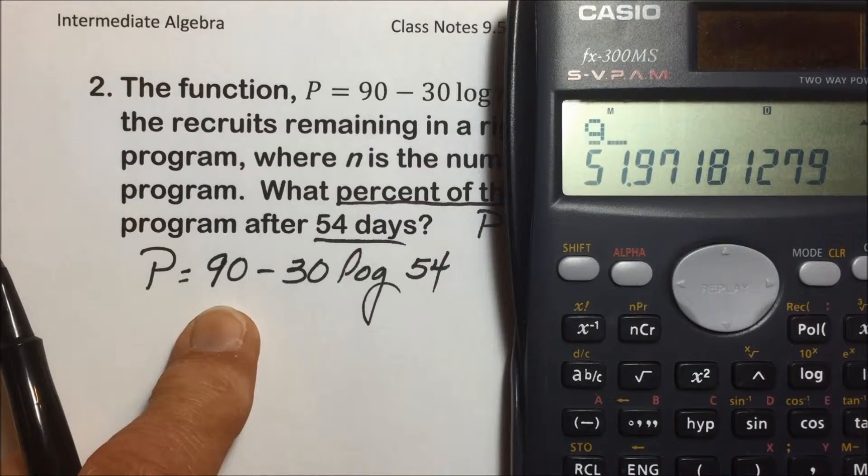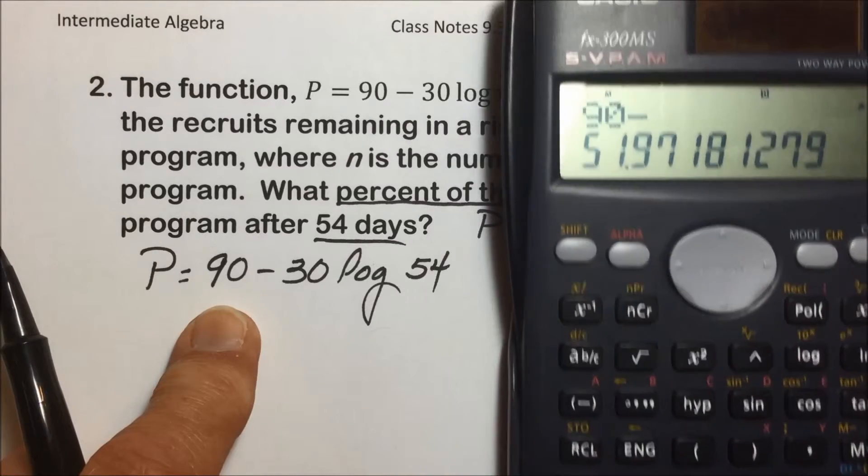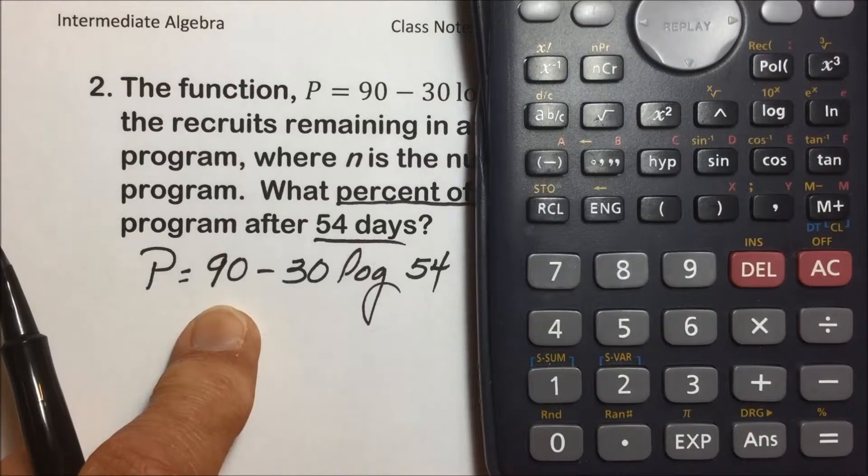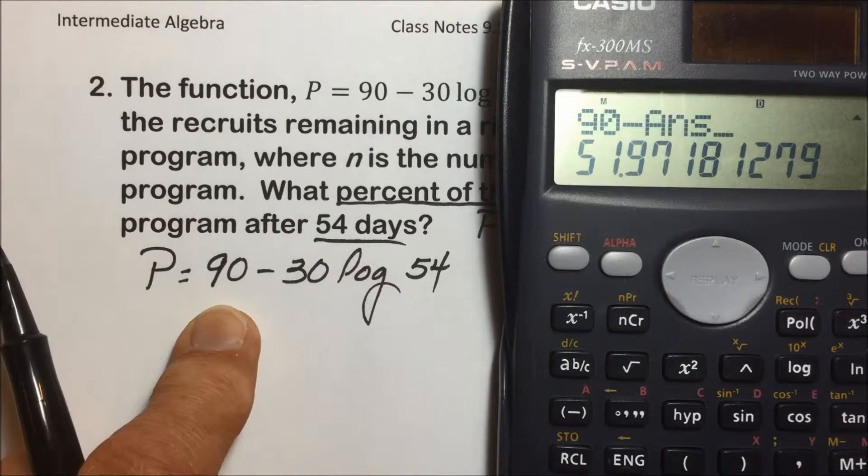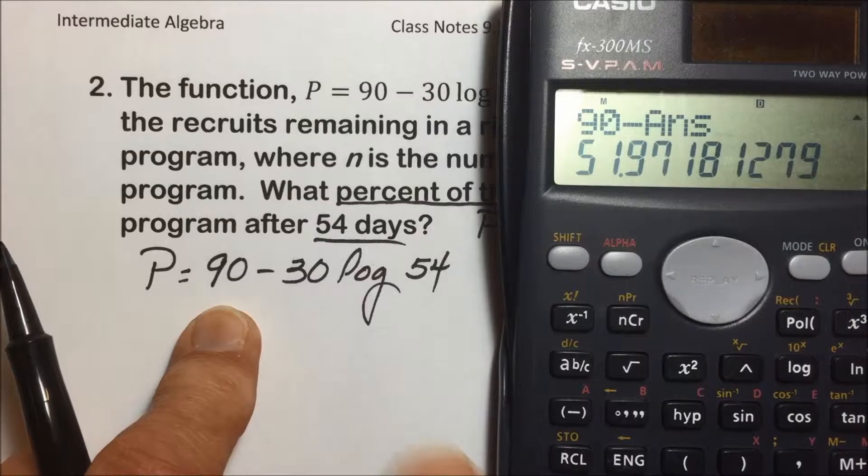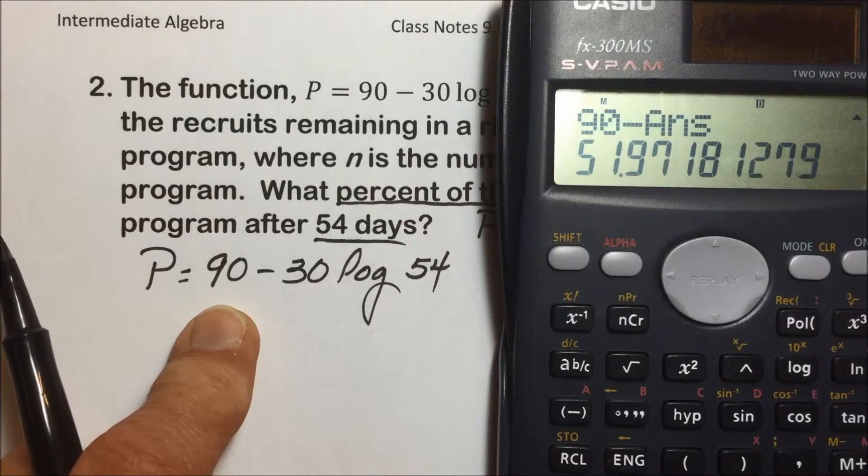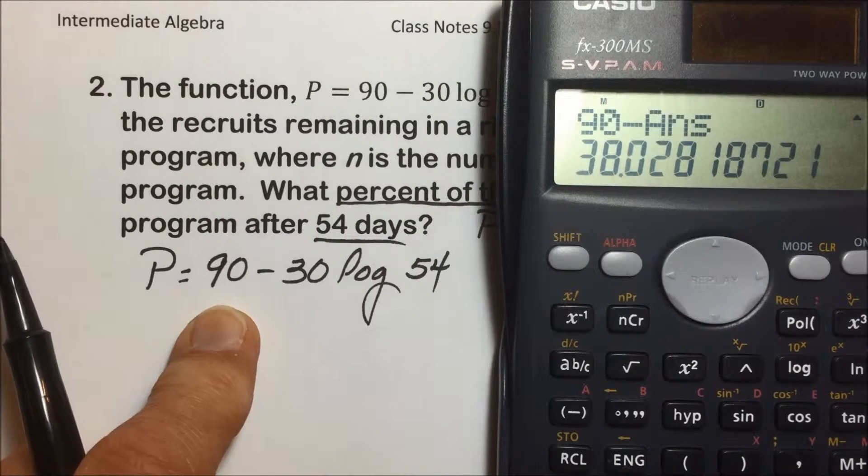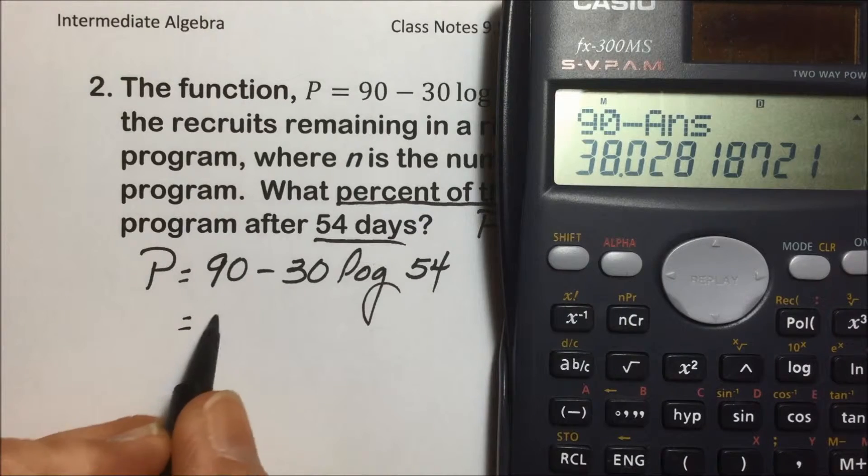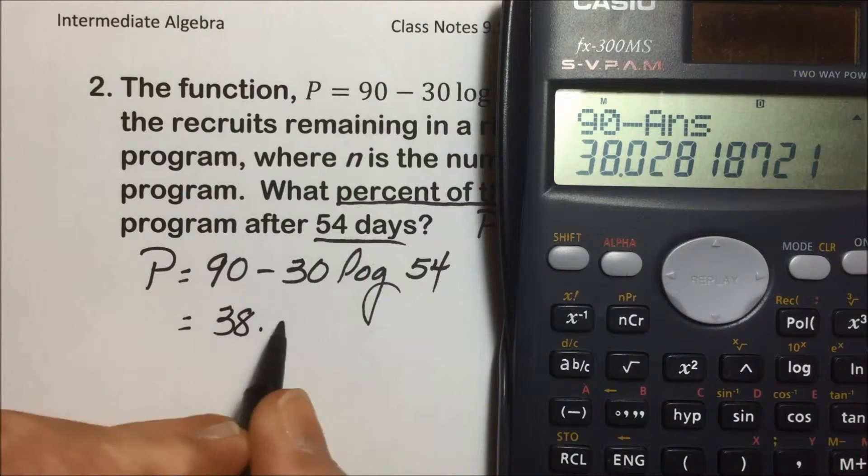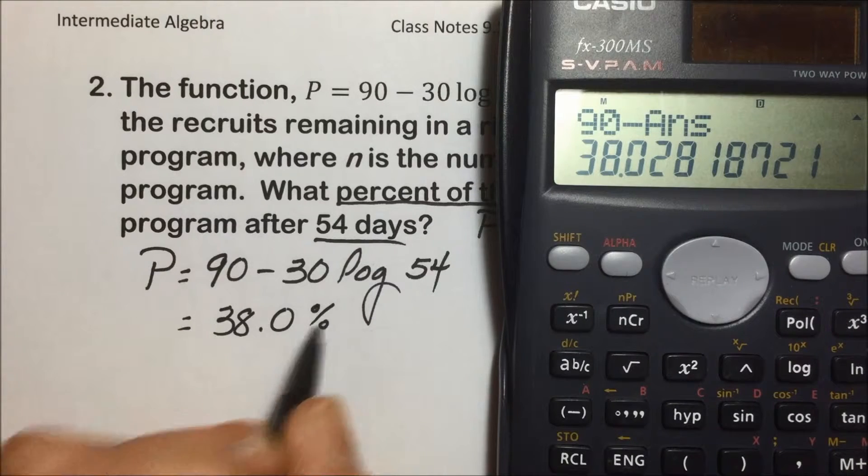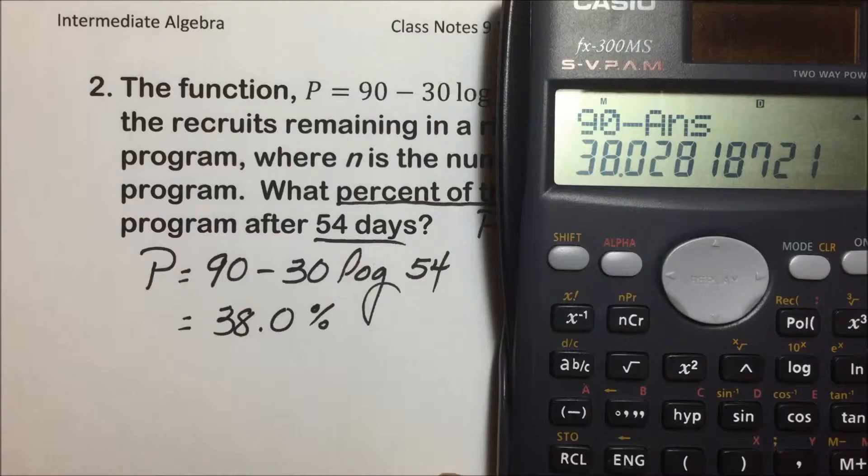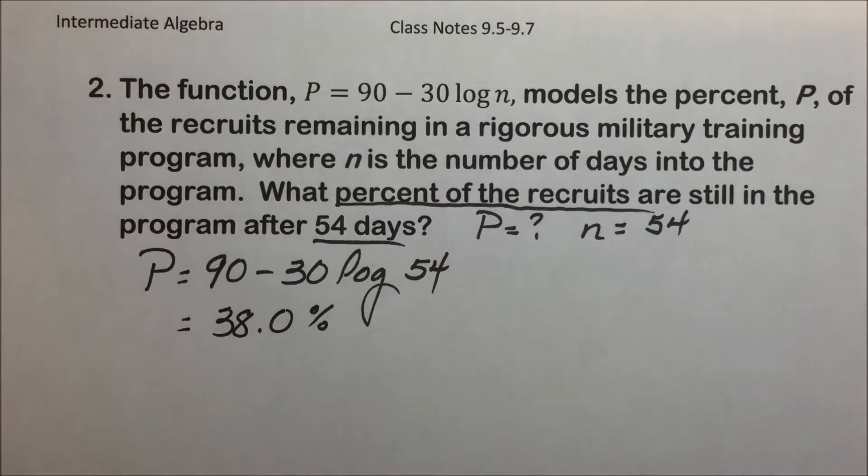So I will enter 90 minus, and then tap the answer button, which shows as ANS, short for answer, which would be the 51.97. Then tap the equals, which is giving us 38, and rounding to the nearest tenth, we would say 38.0% of the original recruits are remaining in this vigorous program.